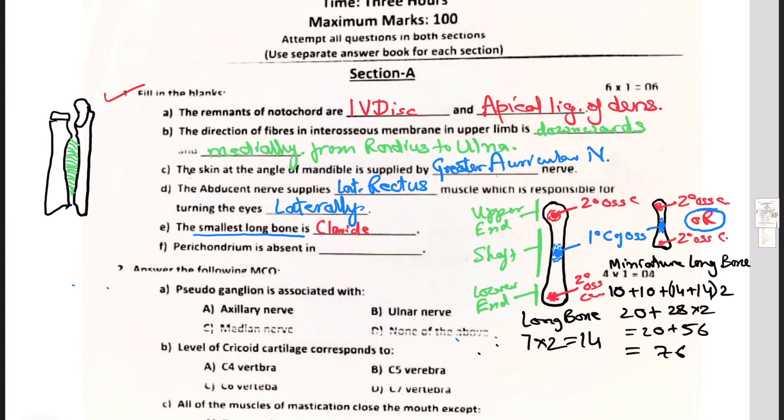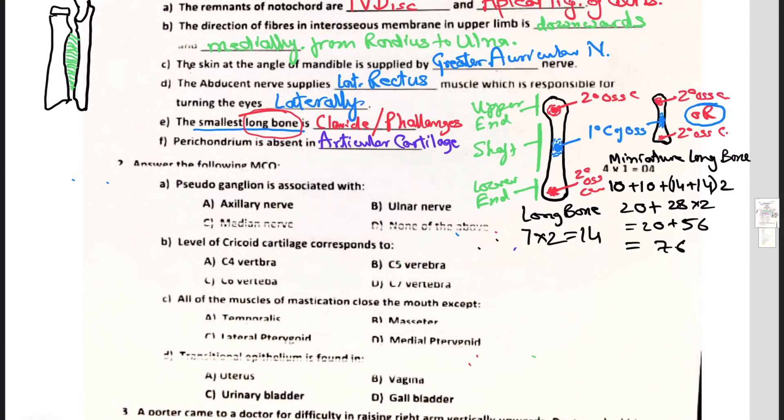Clavicle can also be considered correct here, or phalanges - both should be marked correct because they have not specified what type of long bone. Perichondrium is absent in articular cartilage that is present at the end of the bones, the surface of the bone which is participating in the joint formation, mostly the synovial joints. Now there are four MCQs.